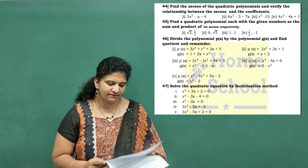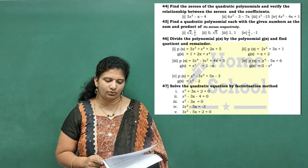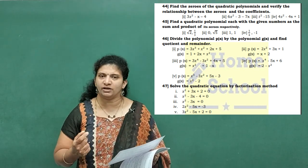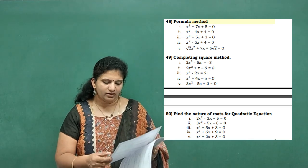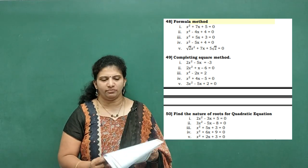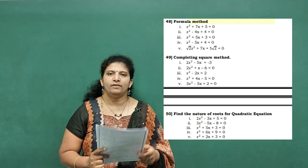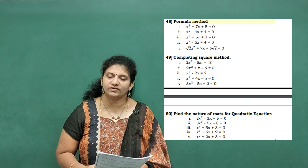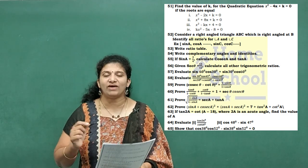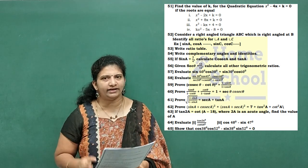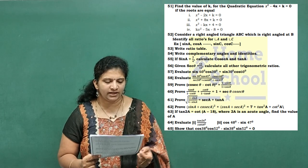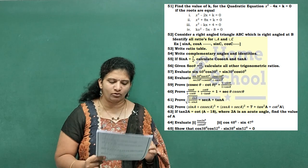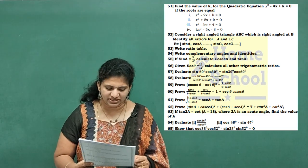From problem 47 onwards — Quadratic Equations. For factorization method I have given five problems, formula method five problems, completing the square method five problems, and finding the nature of the roots five problems. Problem 51: find the value of k in the given quadratic equation. For Trigonometry, some minimum important questions have been given; we cannot guess many questions from this chapter, but if you prepare one type you may get a similar one.